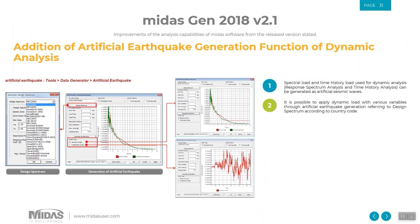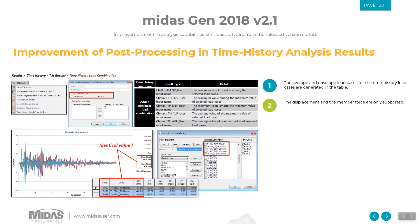If we want to simulate our structure under different earthquakes, we can perform dynamic analysis by adding artificial earthquakes using the generation function in the model. Improvement of post-processing in time history analysis results — like the average and envelope load case for time history — is now generated in the table.